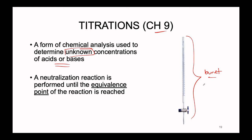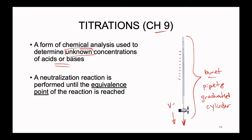A burette is like a fancy combination between a pipette and a graduated cylinder. It has a little nozzle at the bottom — like the pipette piece — and graduated marks on the upper half, like a graduated cylinder. We know exactly how much volume we are adding from the burette into whatever solution is present below it. If we know the concentration of the substance in the burette and how much we have added into our unknown, we can calculate the unknown's concentration.